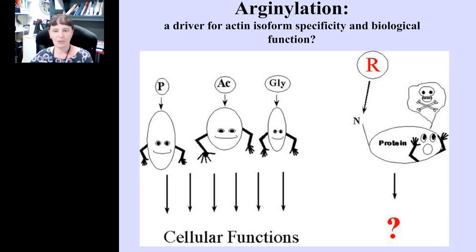Here I'll pause to introduce protein arginylation, a post-translational modification that has been characterized very recently. I will show you evidence today that arginylation represents a novel driver for actin isoform specificity of actin's biological function. Protein arginylation consists of the post-translational addition of the amino acid arginine to proteins. This modification was discovered in 1963, a very long time ago, alongside many other PTMs. But unlike all the other modifications, for the longest time we knew almost nothing about arginylation — which proteins get modified, or what the downstream effects of that modification are.